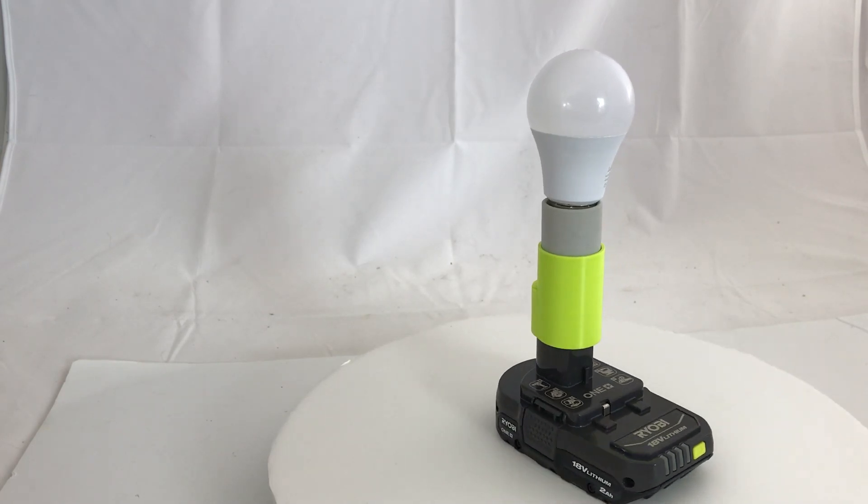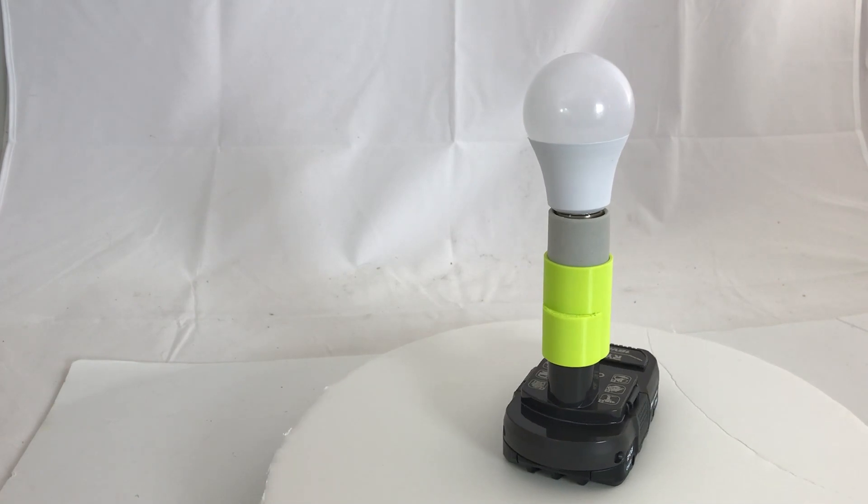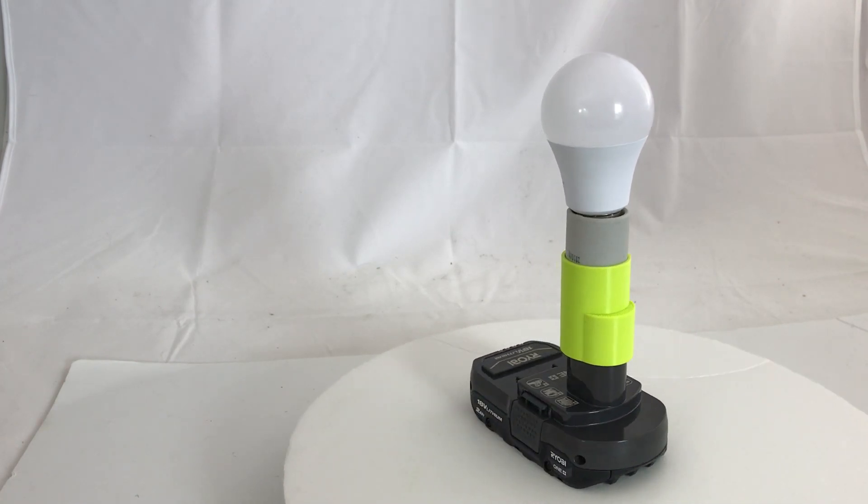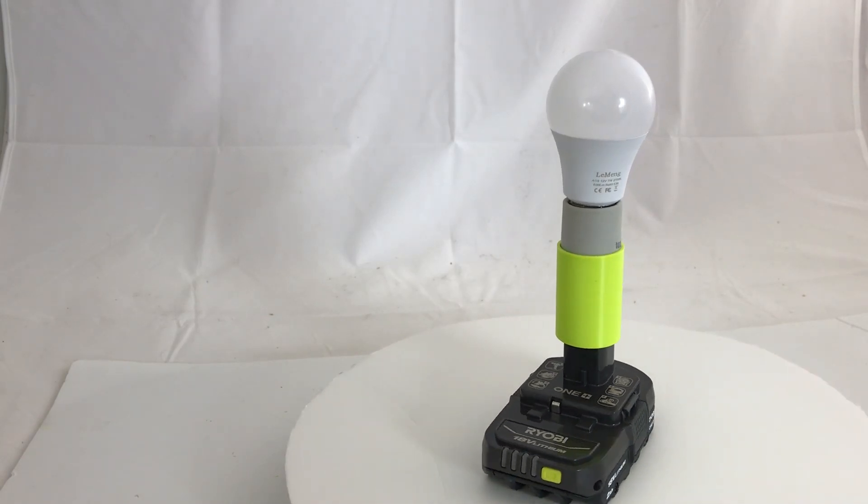Hi, it's Chris and here's a simple project that you can use your 18 volt Ryobi battery with a low voltage 12 to 24 volt LED light. It's great for camping or when the power goes out.